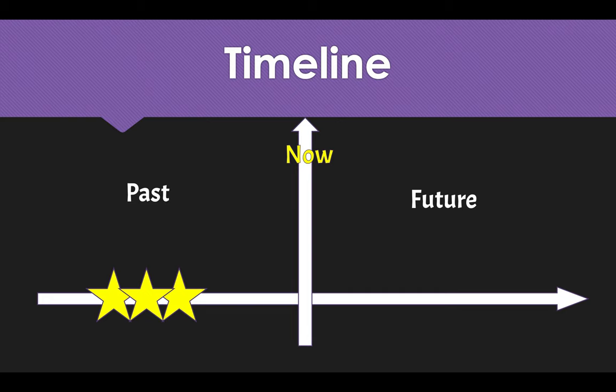So let's look at our timeline first. We have the horizontal line and the vertical line. The horizontal line on the left, we have the past, and on the right, we have the future. The vertical line represents now. So we have three yellow stars in the past representing 'used to'. That means that it happened many times in the past.